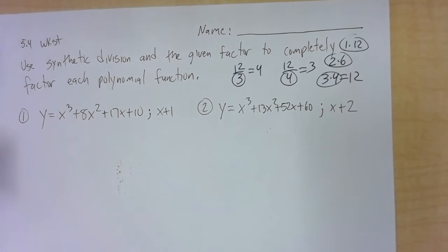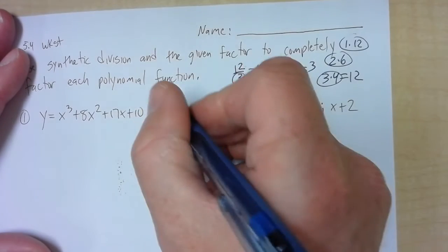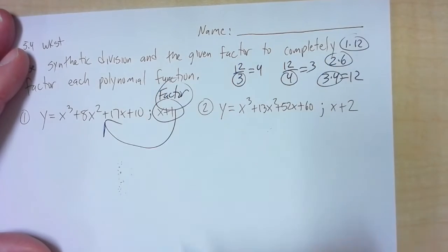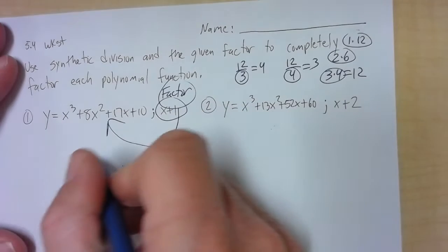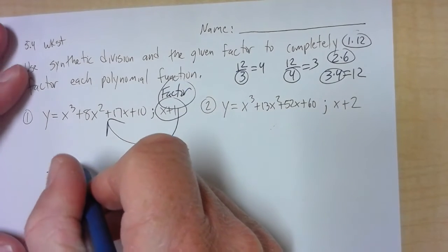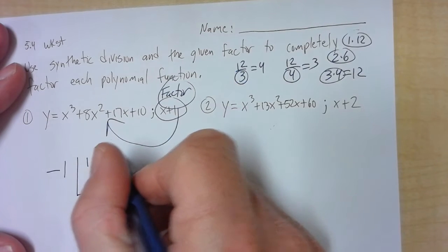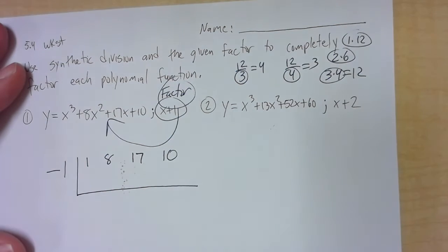Now, therefore, this is a factor that means it will divide into this evenly. So change the sign. 1. Negative. Strip away the coefficients. Perform synthetic division.